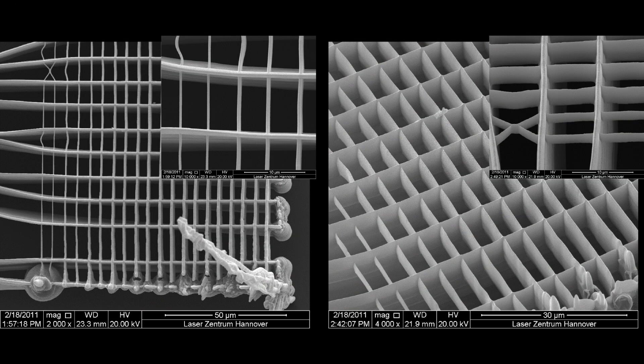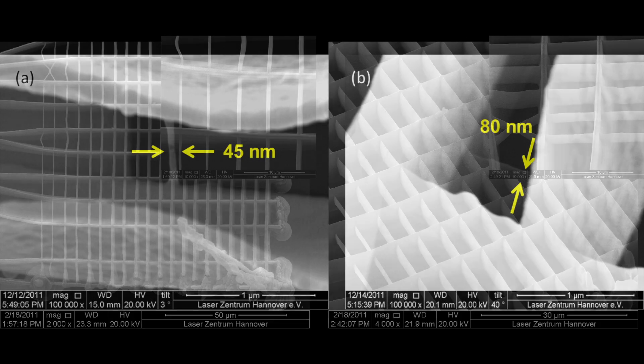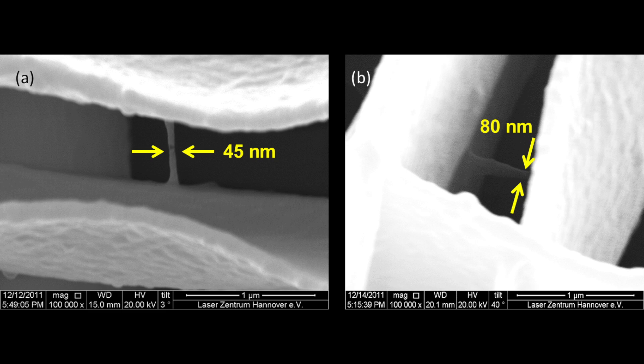Varying the writing parameter leads to different structure widths and heights. This way structures with a width of just 45 nanometers and a height of just 80 nanometers were realized.